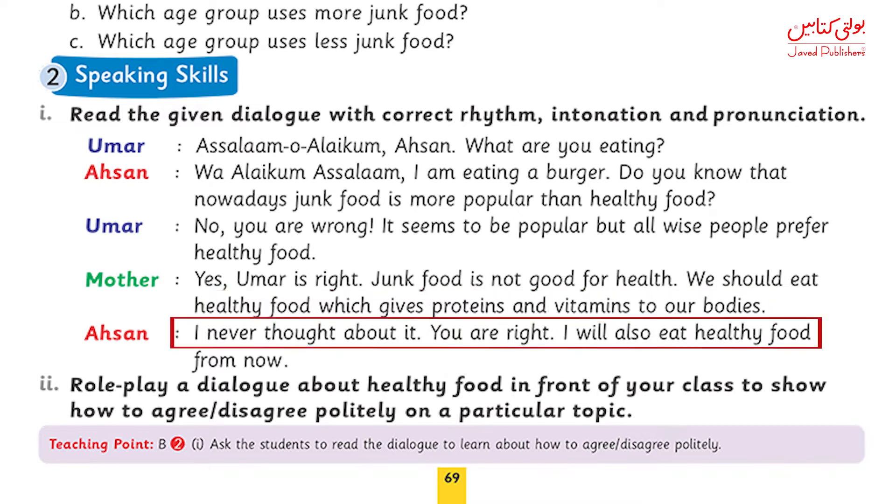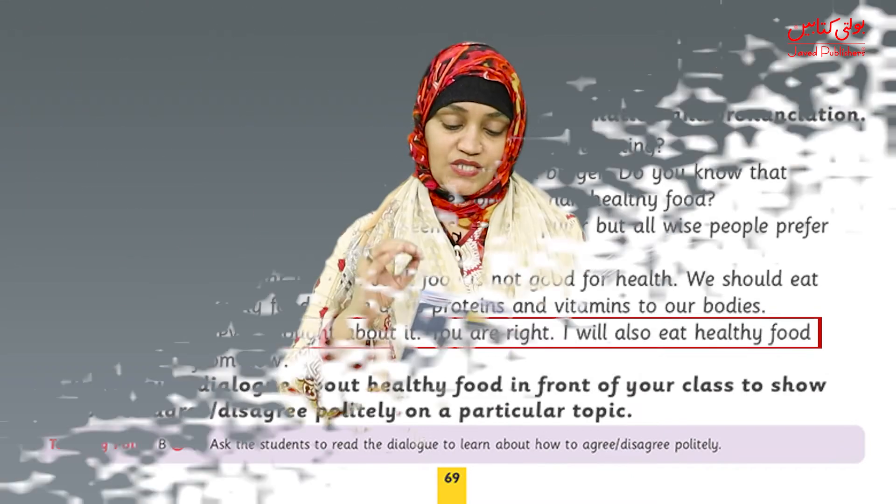Ahsan says: I never thought about it. You are right. I will also eat healthy food from now on. Dear teachers, here you need to tell the students that when you agree or disagree, you should do so politely, meaning you give proper reasons. Like here, mother said that healthy food gives us proteins and vitamins — that is a very good reason. So when you disagree with somebody politely, you give them good reasons for that.